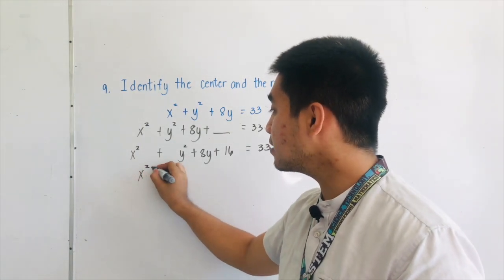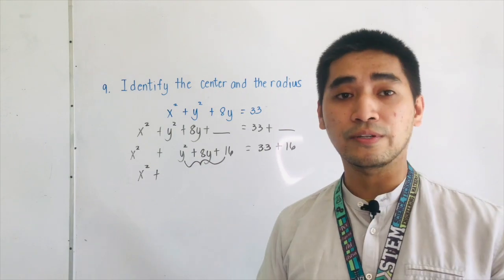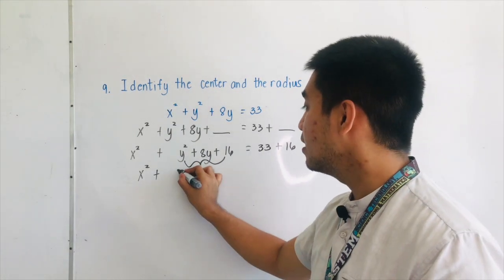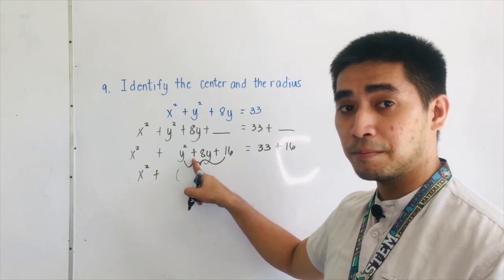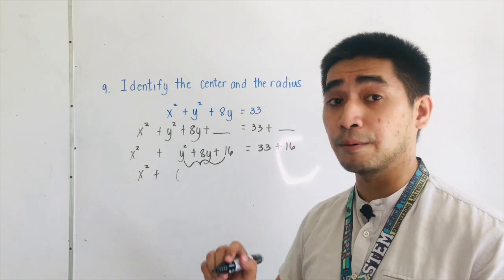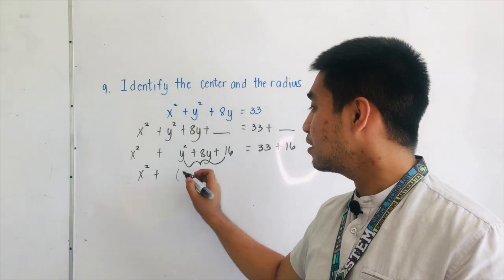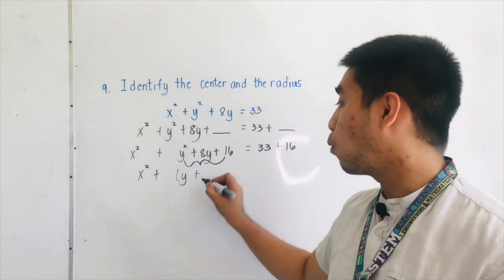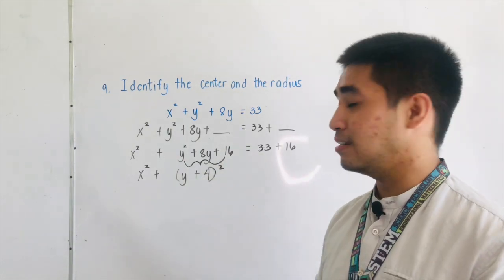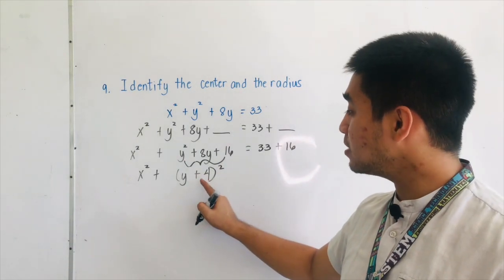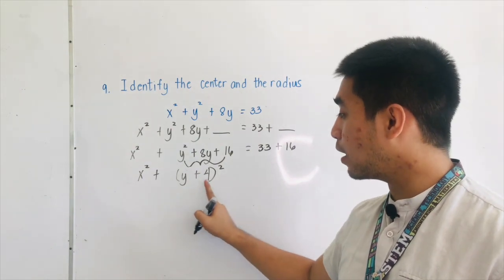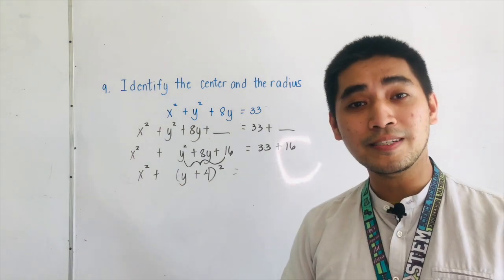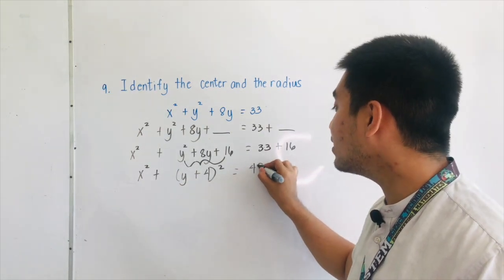We'll be having x squared plus — let us now get the factors of y squared plus 8y plus 16. Since the middle term is positive and the last term is also positive, we'll be having y plus 4, quantity squared. Since 4 times 4 is 16, and 4y plus 4y is equal to 8y. And 33 plus 16 gives us 49.